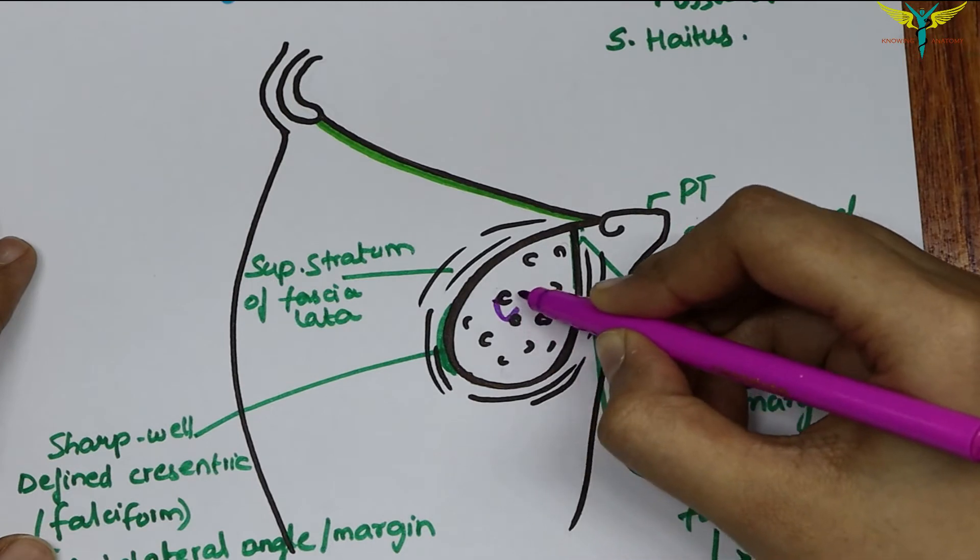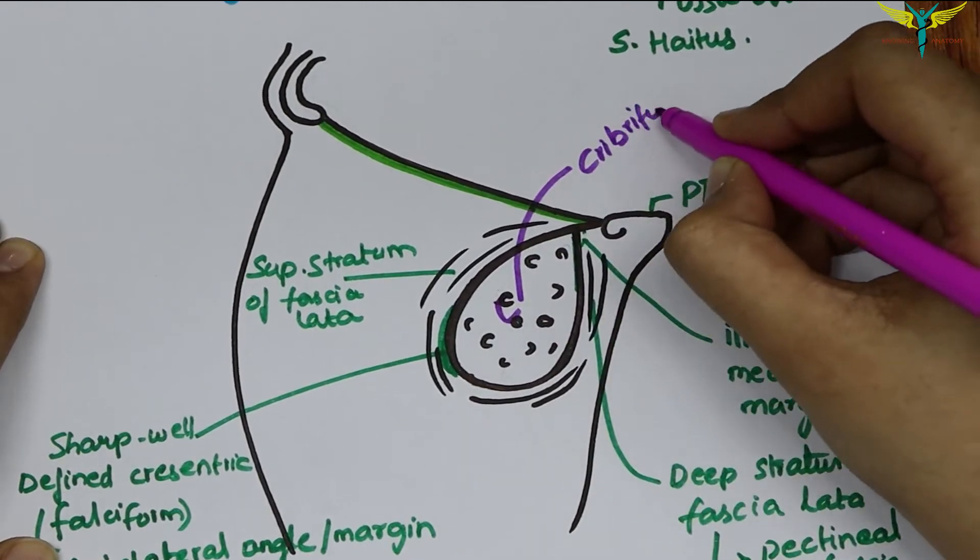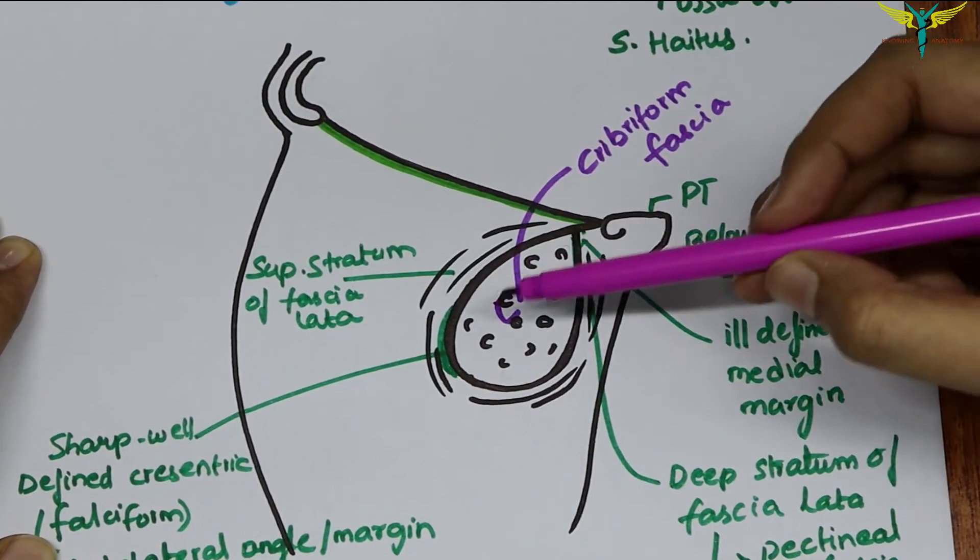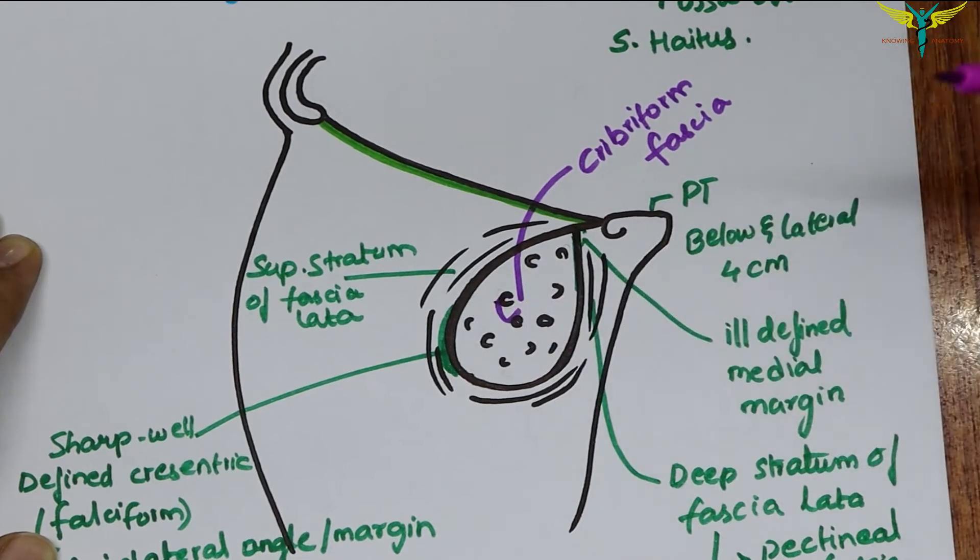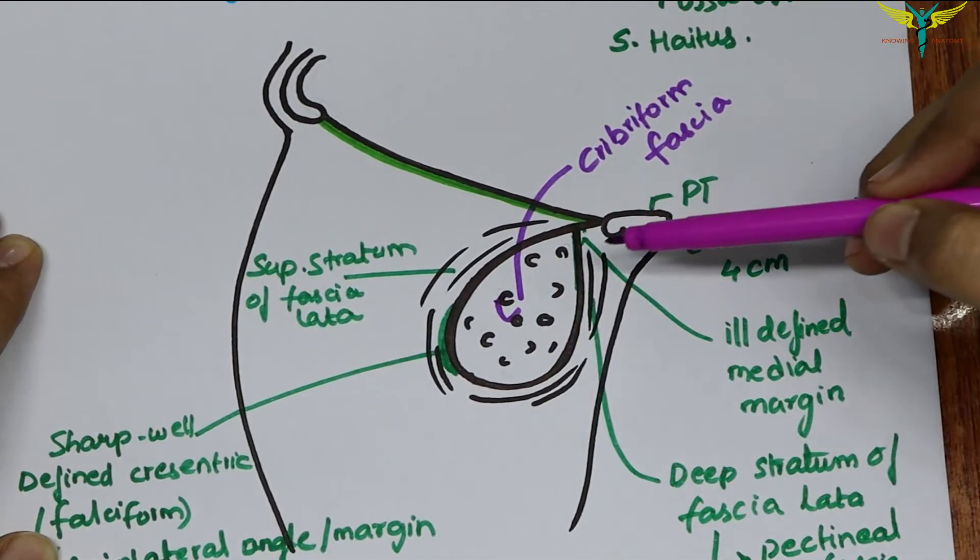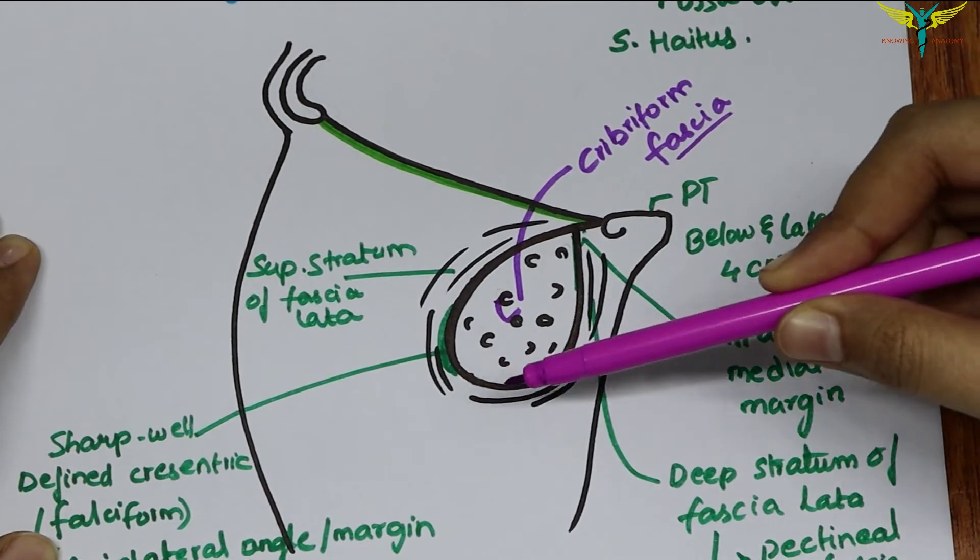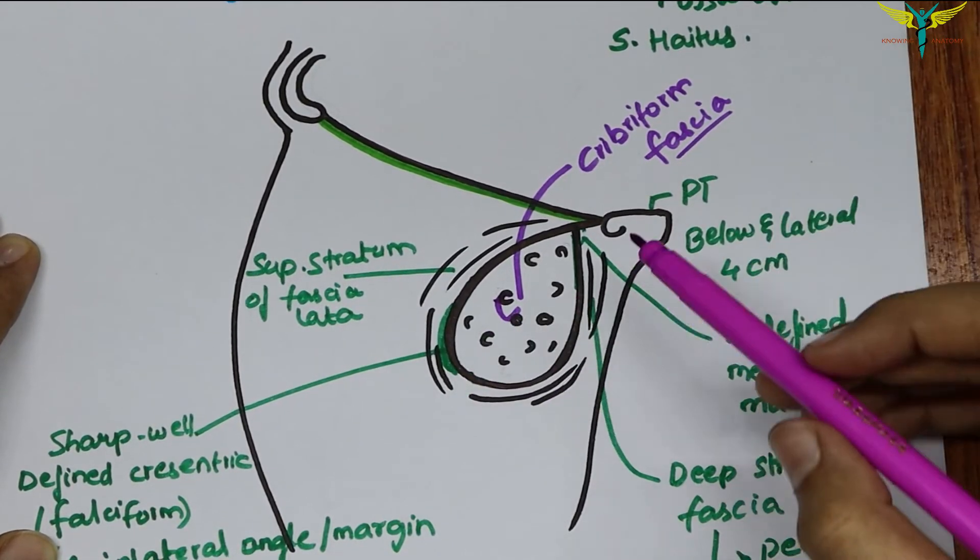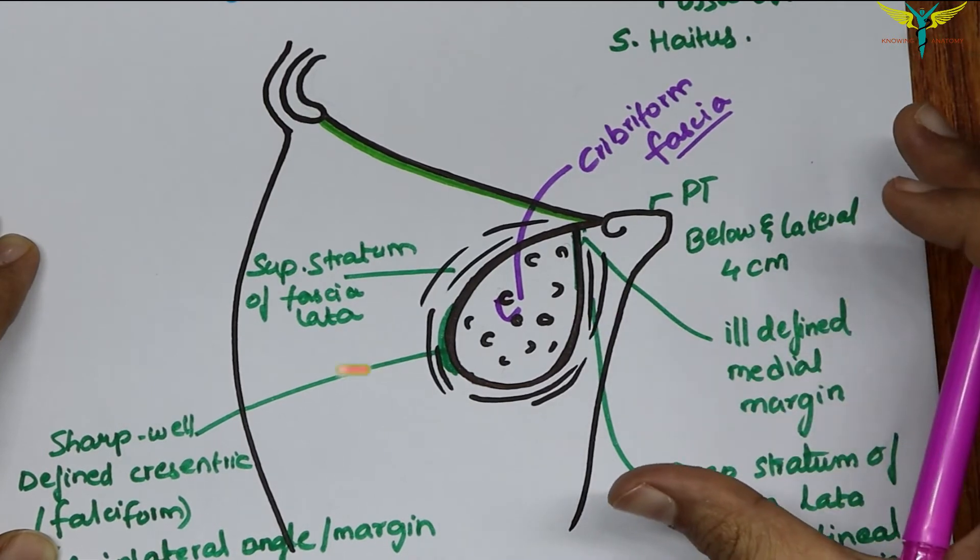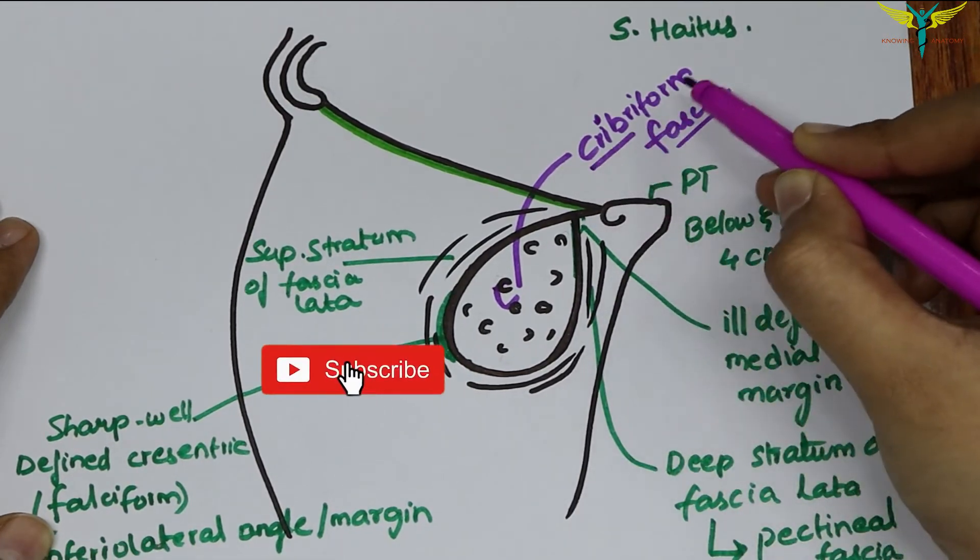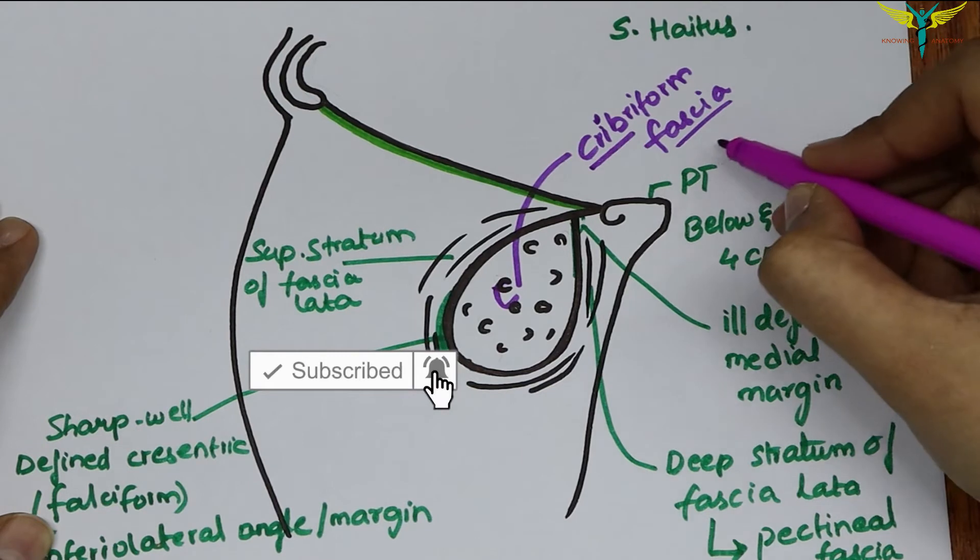This is the cribriform fascia. The saphenous opening is closed by a membrane of areolar tissue that is called the cribriform fascia. This cribriform fascia is pierced by a number of structures that makes it sieve-like, and so the name is given as cribriform, which means sieve-like.